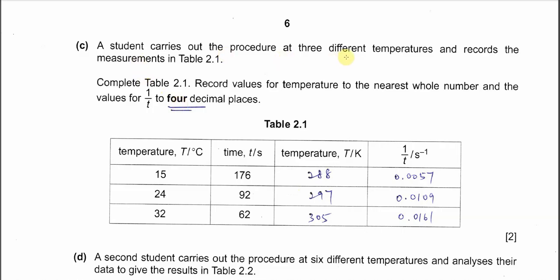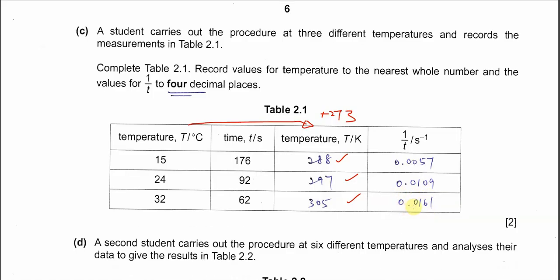Part C: a student carries out the procedure at three different temperatures and records measurements in table 2.1. To complete the table, convert temperature to Kelvin by adding 273. For 1/T values, make sure to use four decimal places. For 1/t (rate), we get values 0.0057, 0.0109, and 0.0161.